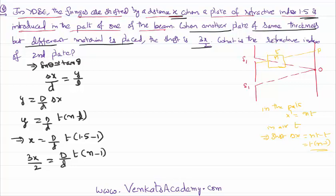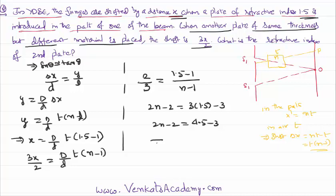Then dividing these two equations we get 2/3 equals (1.5 - 1) over (n - 1). That is 2n - 2 equals 3 times 1.5 minus 3, so that's 4.5 - 3 = 2n - 2. Simplifying this, we get the value of n is 1.75.